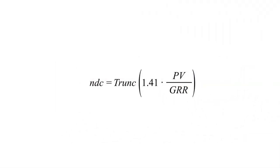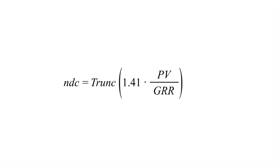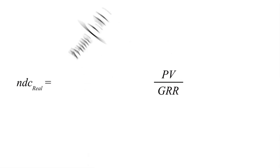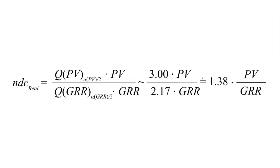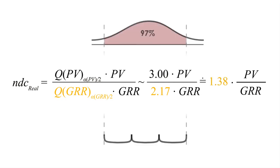Well, the MSA formula is not exactly correct, but fortunately, the problem is only the constant. The real number of distinct categories would have to have the quantile of the gauge R&R's distribution in the place of the 1.41, which for normal distribution would be something like 1.38 for the claimed 97% probability, and the usual 3 sigma of part variation.